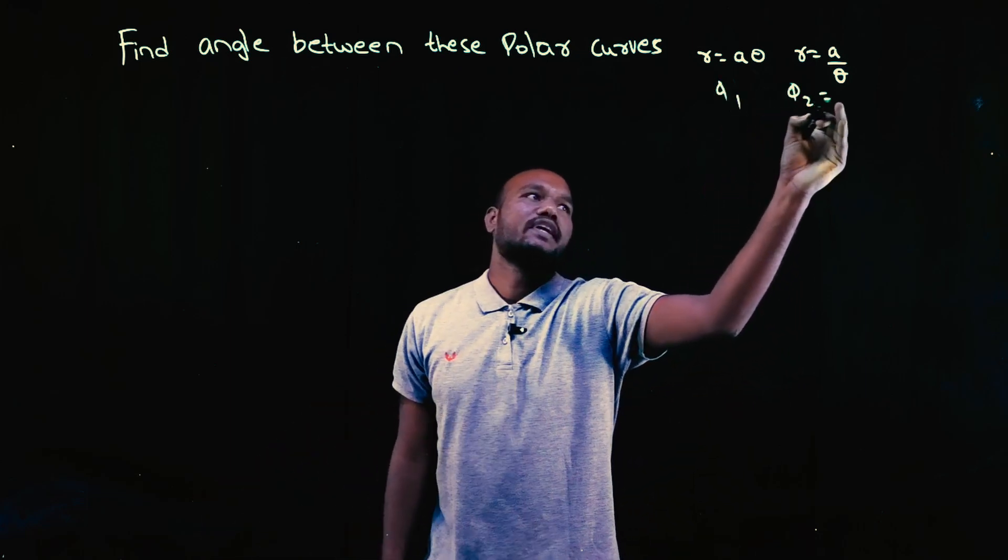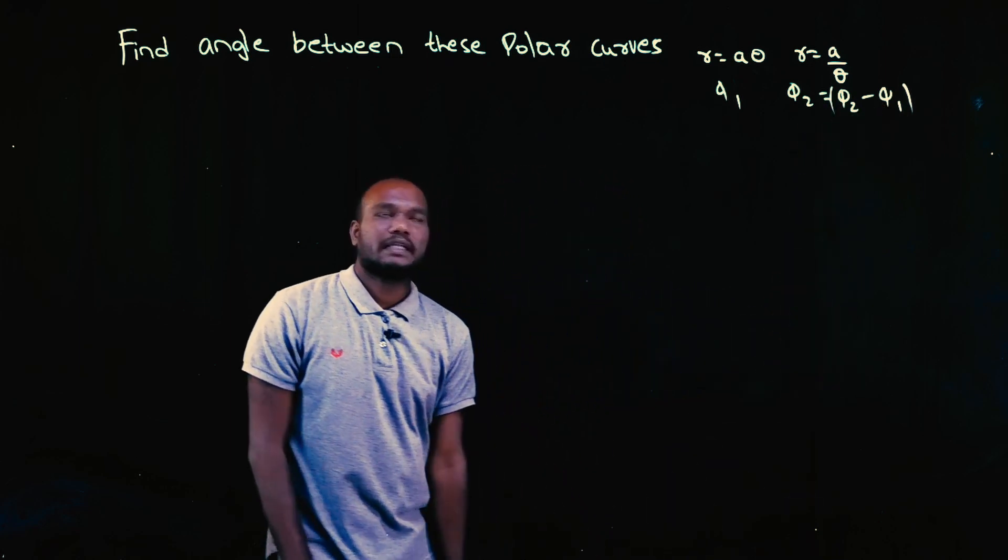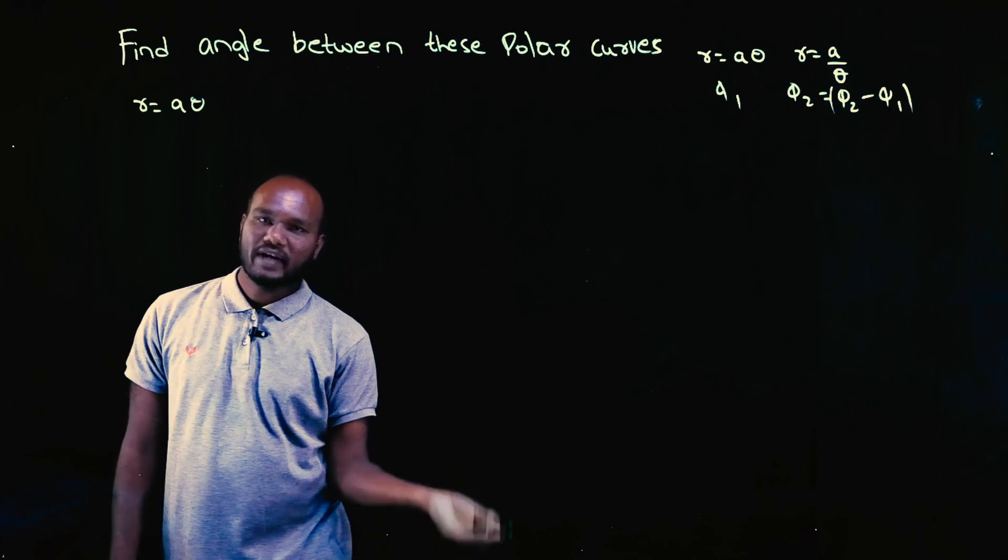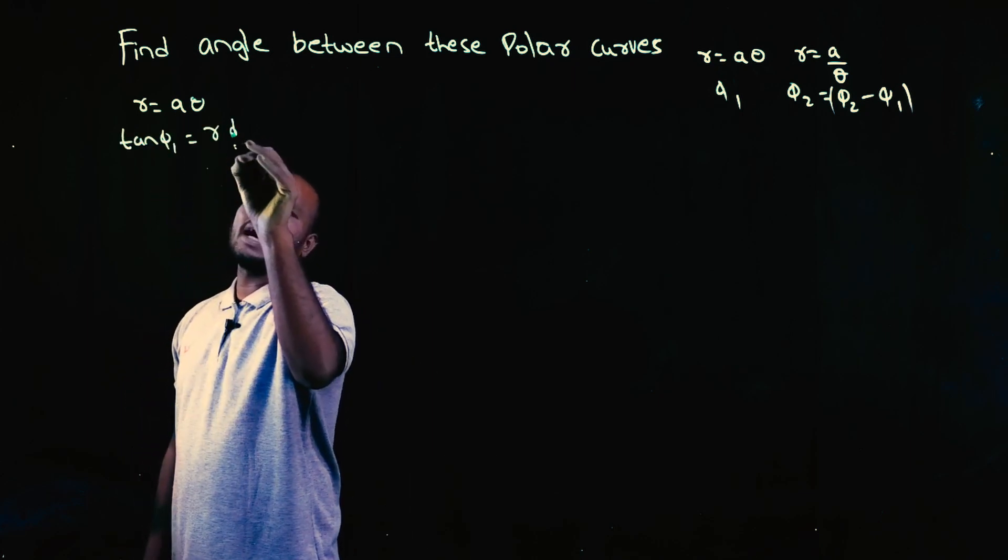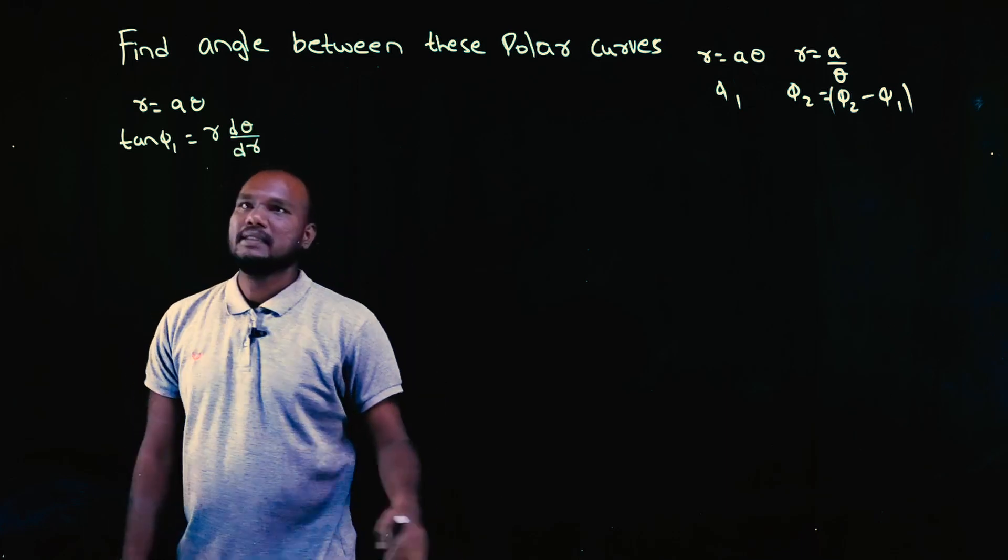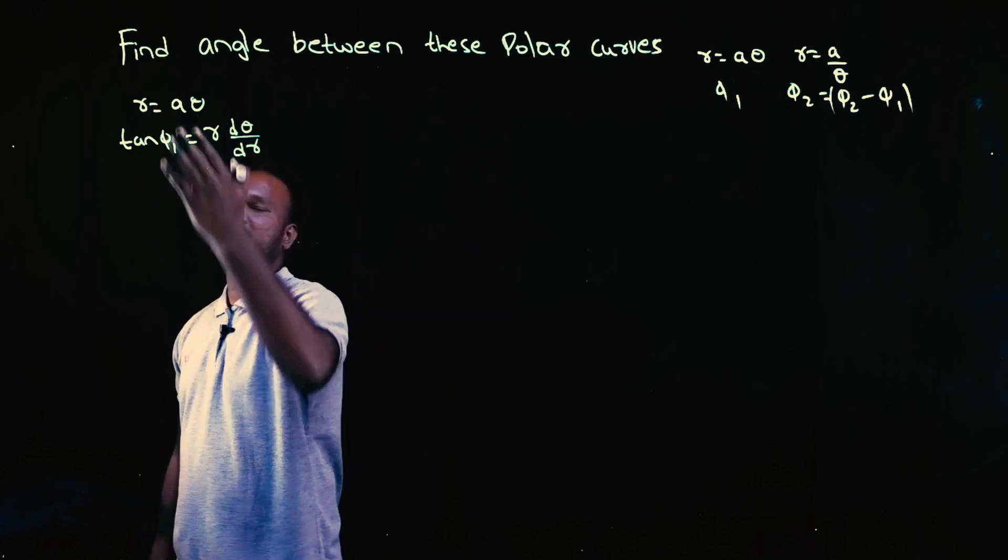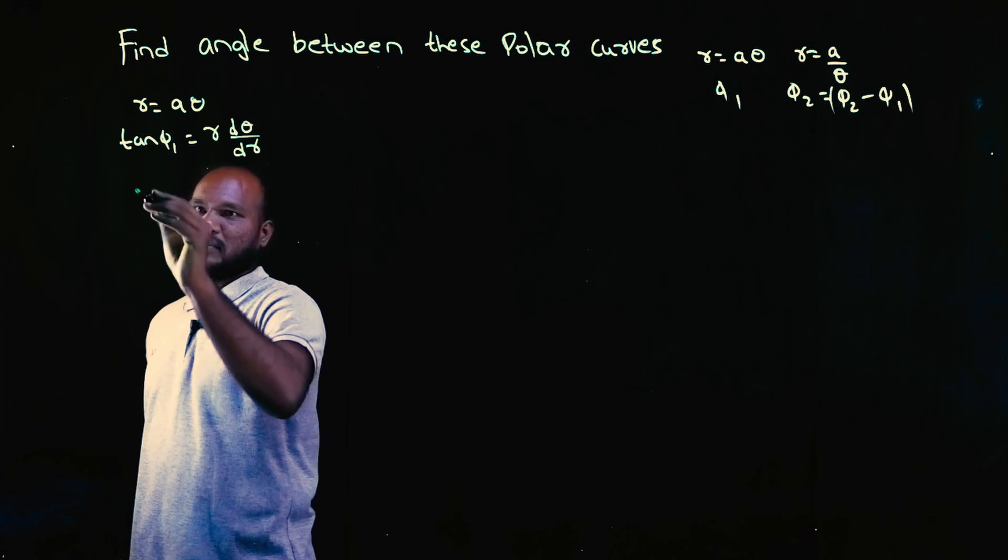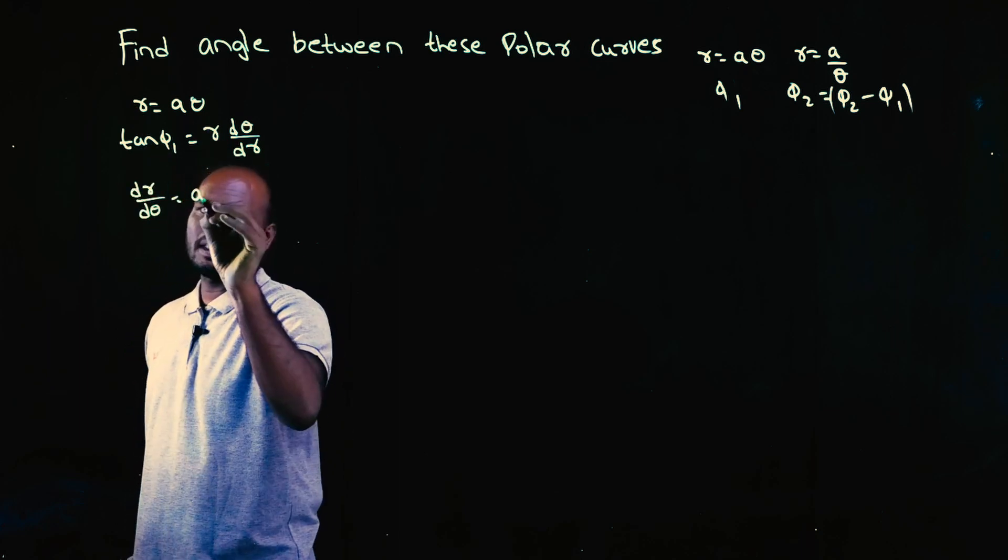To do that, we need to find φ₁, we have to find φ₂, and φ₂ minus φ₁ is what we have to find out. So let's take curve number 1: r = a·θ. To find φ₁, we have to find tan φ₁, which is r·dθ/dr. So r is given directly, dθ/dr we can find out by differentiating. No need of logarithms. The differentiation is dr/dθ = a. Let's keep it as it is.